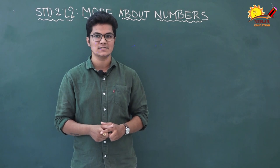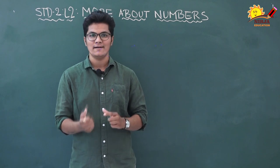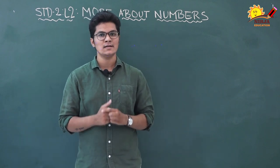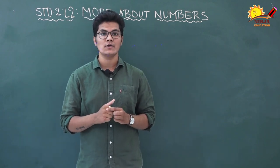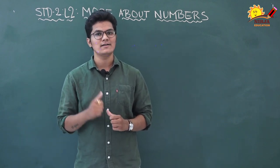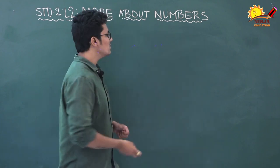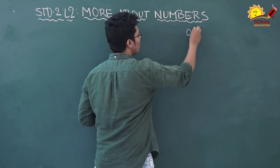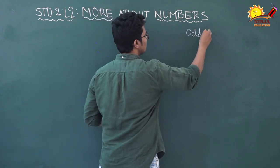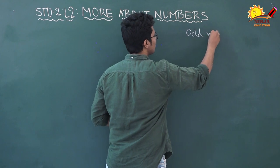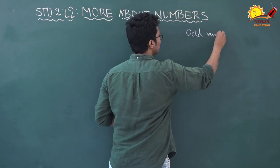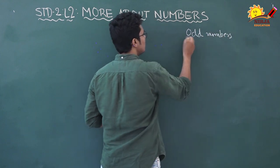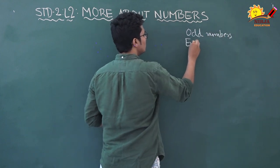Up to one thousand — all are numbers. But in this lesson we are going to learn about odd numbers and even numbers.